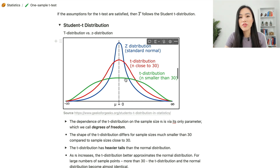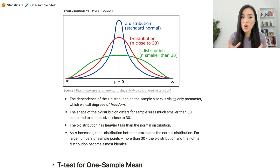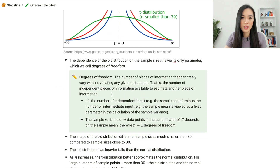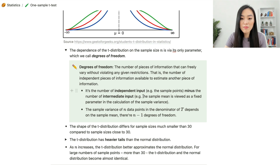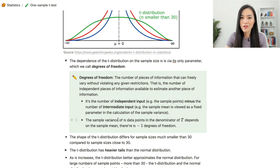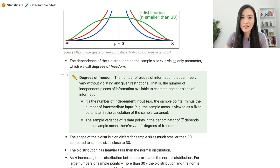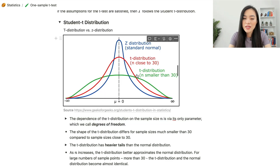Here's a diagram showing three curves: the blue curve is the z-distribution or standard normal curve, and the red and green curves are both t-distributions with different sample sizes. The t-distribution depends on sample size via its only parameter: degrees of freedom. Degrees of freedom is the number of independent pieces of information available to estimate another piece of information — the number of independent inputs minus the number of intermediate inputs. For the sample variance of n data points, we have n minus 1 degrees of freedom.